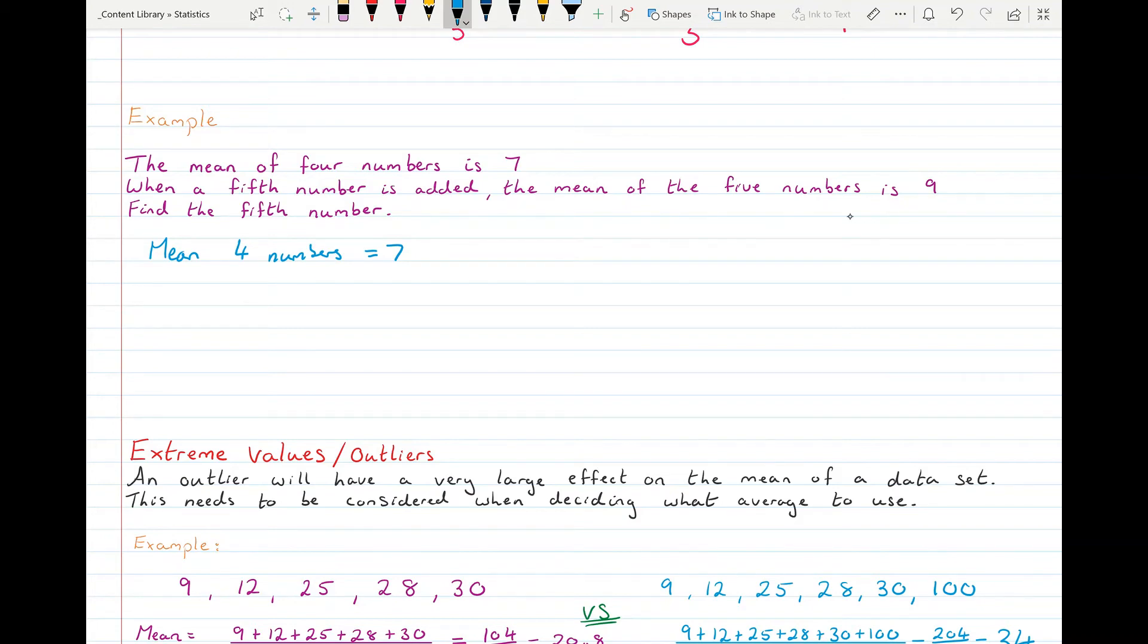So we could say that the sum of all the numbers, the sum of those four numbers would be seven times four, it's going to be 28. So when you added up all those numbers together, you would have got 28. Because then they divided by four, which gave them seven. So we're doing the opposite of dividing by four, we're multiplying by four.